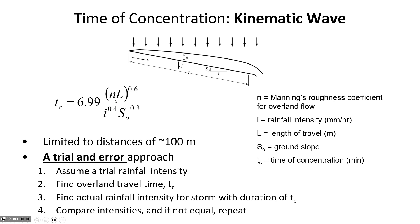The kinematic wave equation accounts for: travel distance L, roughness (Manning's n for overland flow), slope, and rainfall intensity. It applies to distances up to about 100 meters, beyond which flow is no longer a sheet. It's an empirical equation — not derived from first principles of physics, but a set of variables known to impact time of concentration with curve-fitting coefficients.